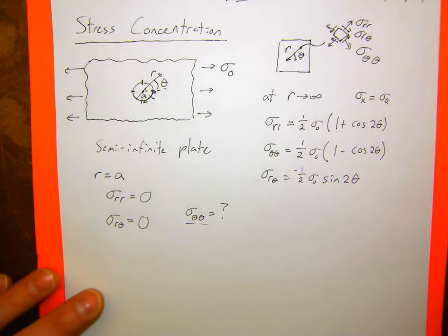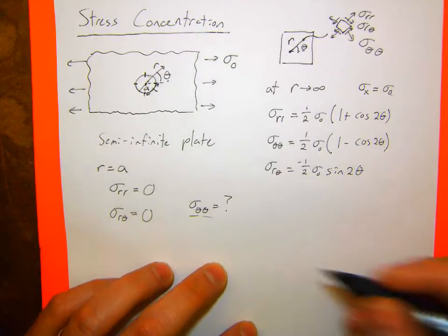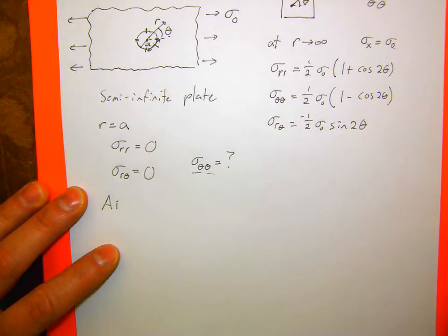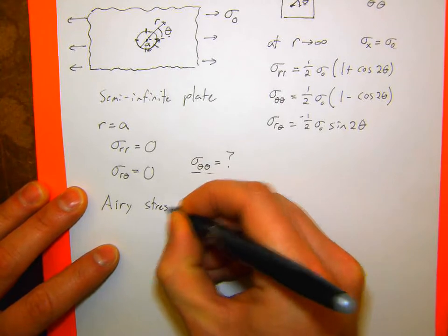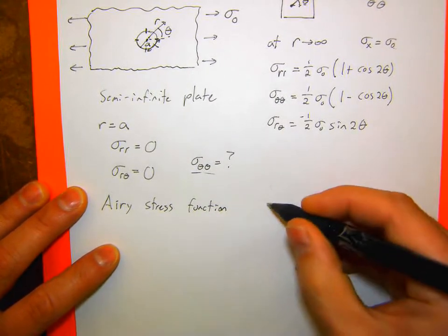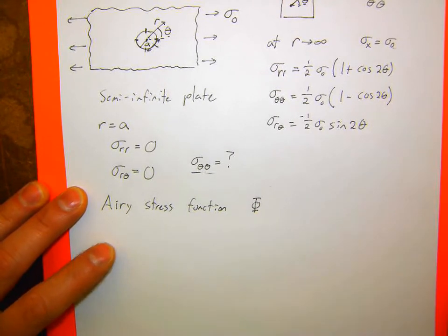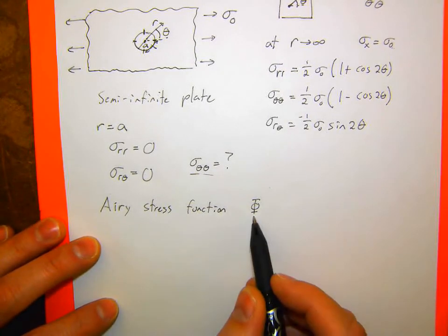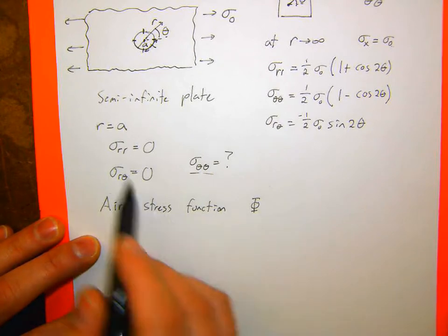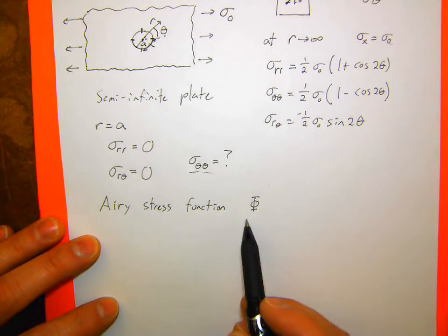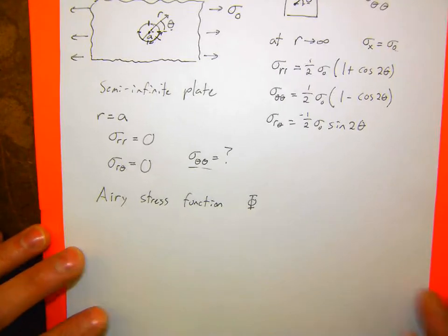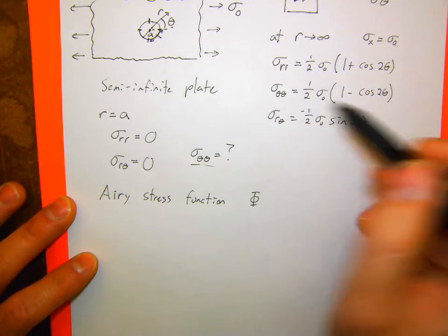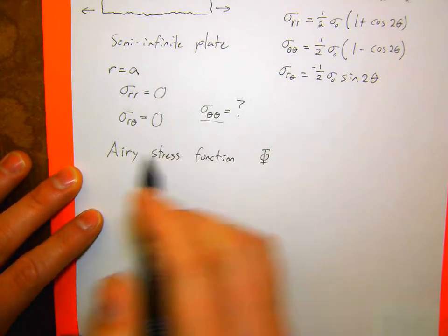You can solve this using something called the Airy stress function — I'm not going to go through the full analysis, but I want you to know about it if you ever take a more complex solid mechanics class. The Airy stress function is some function phi whose second derivatives with respect to different coordinates match up to the stresses. So I can relate all stresses to a single function, and solving the resulting partial differential equation in r and theta, then plugging in boundary conditions, gives me a general solution.